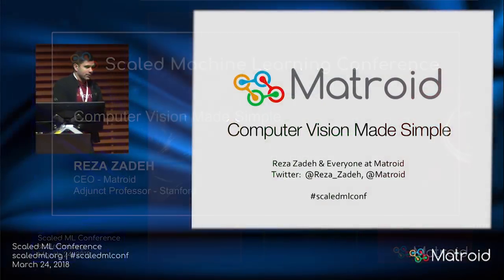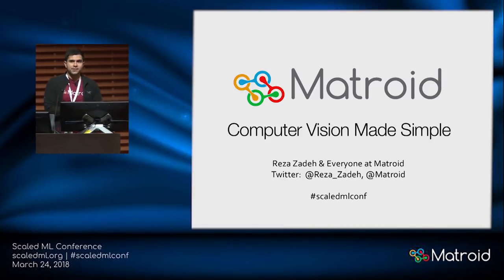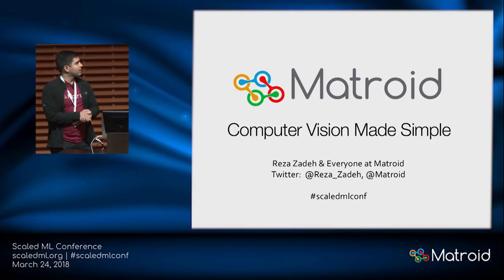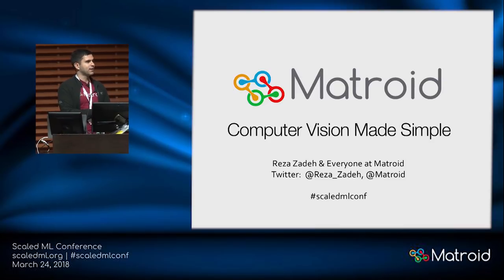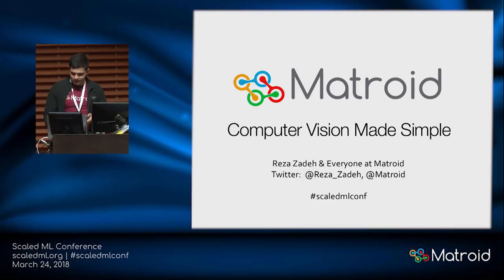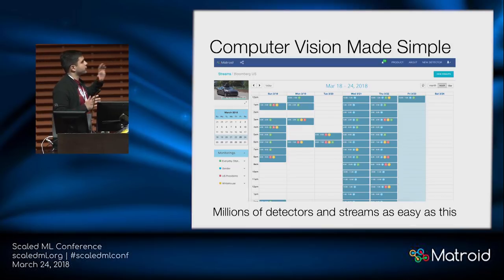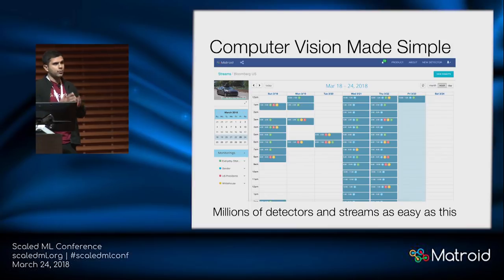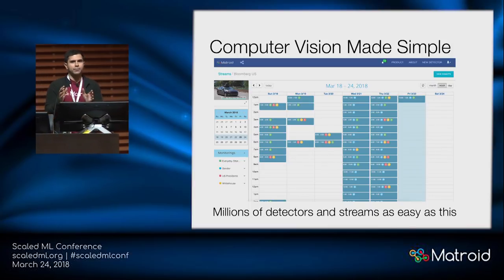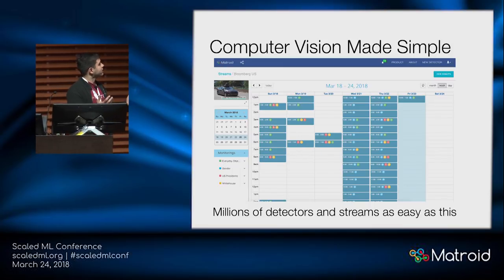What I'd like to show you now is what we've been working on for the past year since the last Scaled ML. We've been building rapidly and this is joint work with everybody at Matroid. I can't take credit for even a tiny piece of it. It's really teamwork. We built infrastructure to deal with millions of detectors and streams for computer vision, which has been largely overtaken by machine learning, which is why we're all in on scaling machine learning.